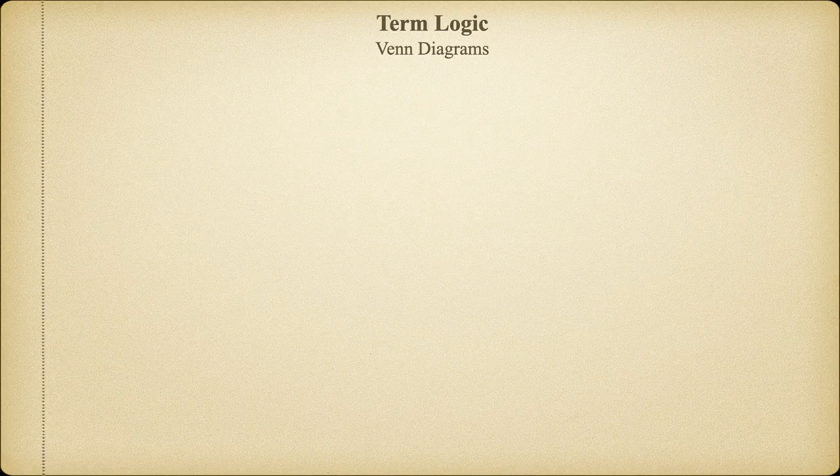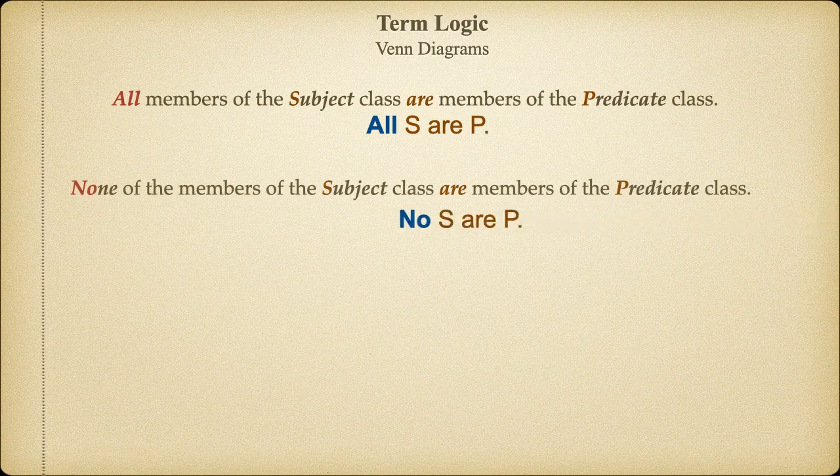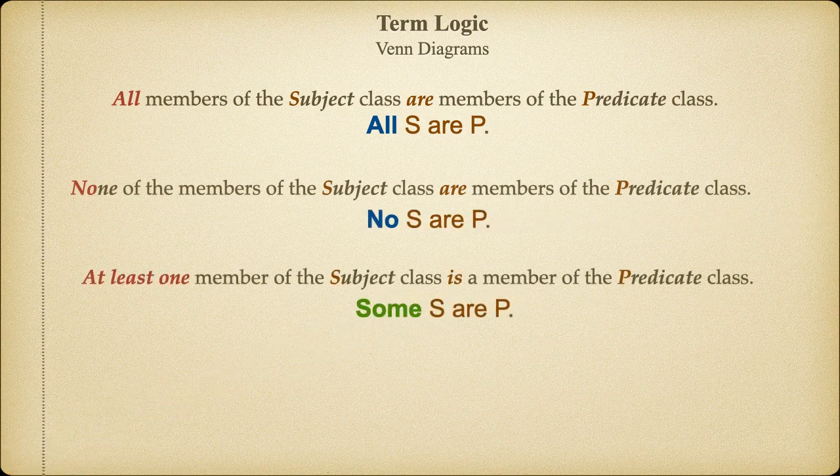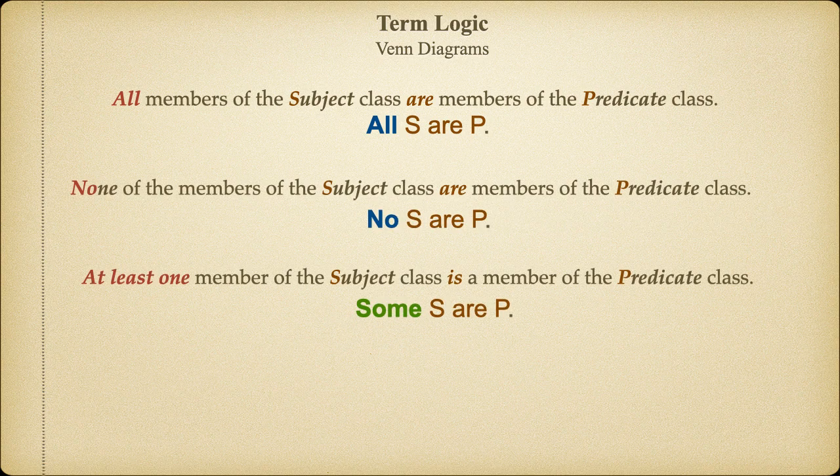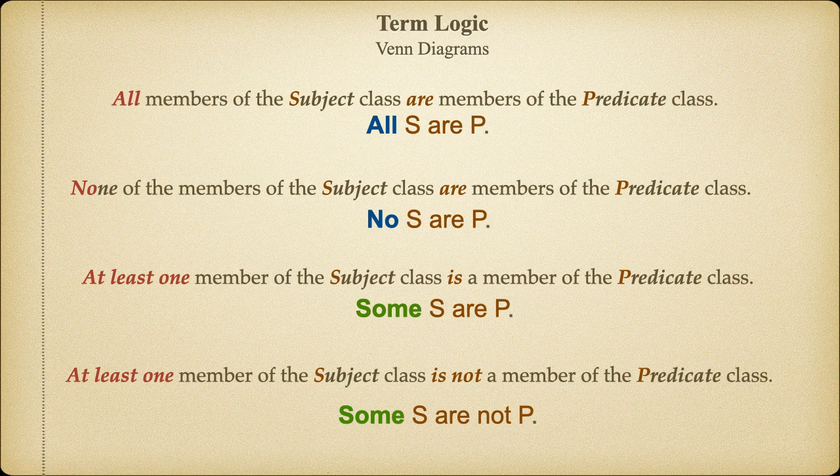In Part 1 of this lecture, we learned about the four categorical propositions: the universal affirmative, all S are P; the universal negative, no S are P; the particular affirmative, some S are P; and of course, the particular negative, some S are not P. We also learned about the concept of distribution, which refers to any term in a categorical proposition that includes the whole class of things.